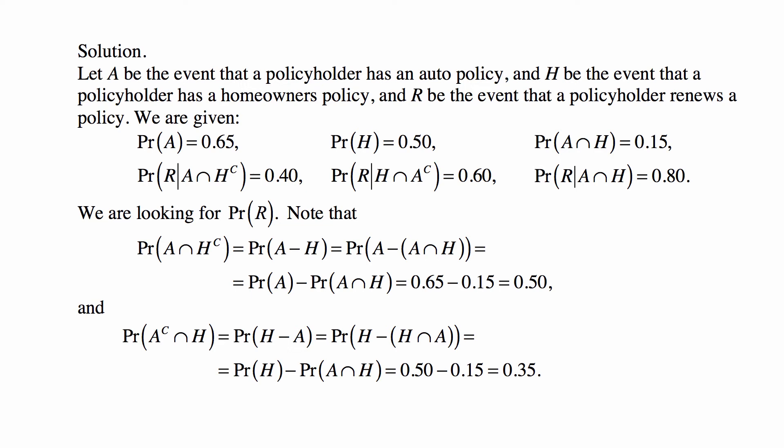So we can now, since A ∩ H is actually inside of A, write it as a difference of probabilities. Plug in the numbers and we know that this is 0.50. The probability of A complement intersection H, that's the probability of the set theoretical difference between H and A. The same way we write it as Pr(H) - Pr(H ∩ A).